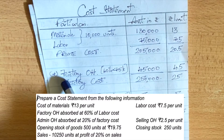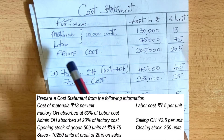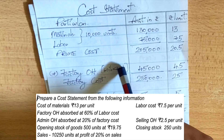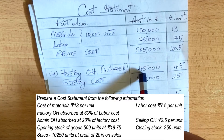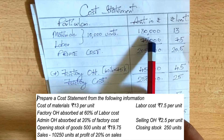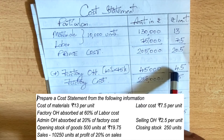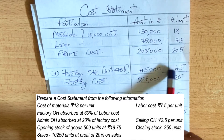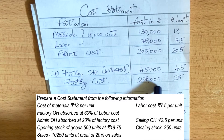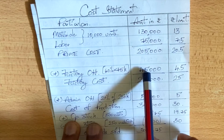Next, our factory overheads are absorbed at 60% of labor cost. Labor cost is 75,000, so 60% gives factory overhead of 45,000. Per unit, divided by 10,000, that is 4.5. So the total factory cost is 2,50,000 plus 45,000.